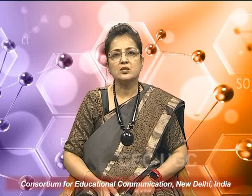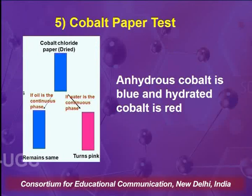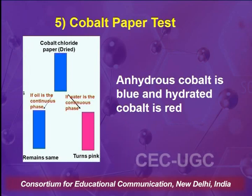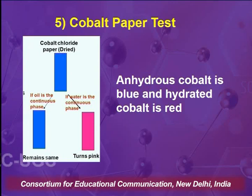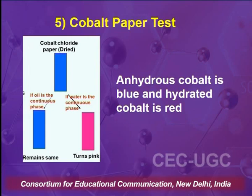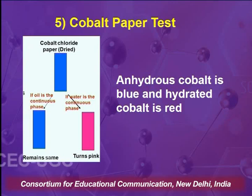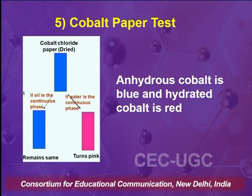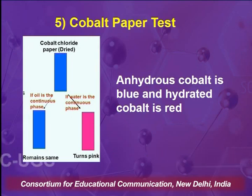The last test for identification of the type of emulsion is the cobalt paper test. A filter paper is treated with cobalt chloride and dried — such a paper is referred to as cobalt paper. Cobalt chloride has a tendency that when exposed to moisture due to its hygroscopic nature, the blue color of cobalt will become pink. Based on this principle, this test is used to identify the type of emulsion.